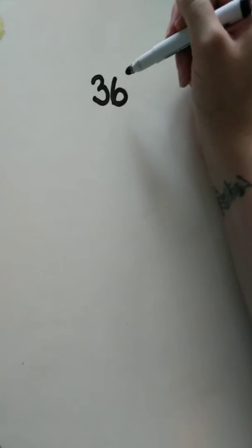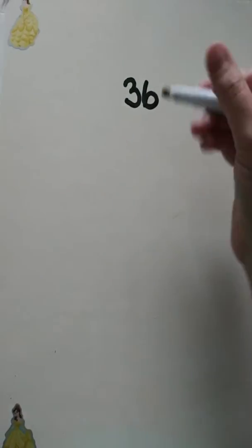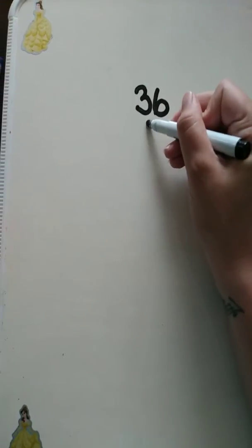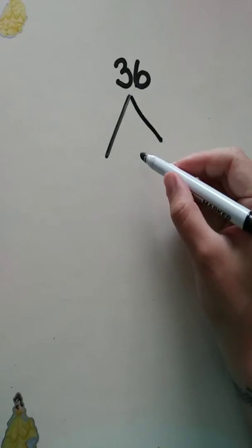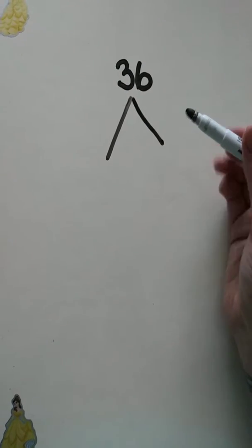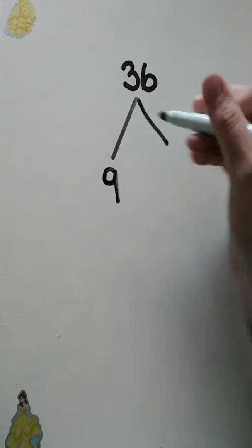So again, it doesn't really matter what factors you pick. I'm going to pick 9 times 4 for this one. So you start with the number that you're decomposing up at the top, and then you break it down. So, what is 36? 9 times 4 is the one that I'm going to use.